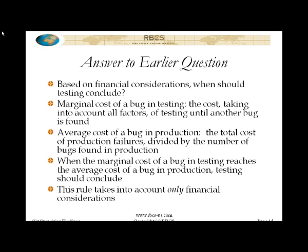I raised a question earlier: based on financial considerations, when should testing conclude? There is an answer to this, and if you do the cost of quality analysis shown in that article, you will be able to do this. What you have to do — and this is just economics 101 — is look at the marginal cost of finding a bug in test, which is the cost, taking into account all the factors that apply, of continuing testing until another bug is found. The marginal cost of testing is going to go up as the cumulative defects found curve levels off, assuming a constant amount of test effort. When the bug find rate is low per hour of testing, the marginal cost of a bug in testing is high; when the bug find rate is high, the marginal cost is low.